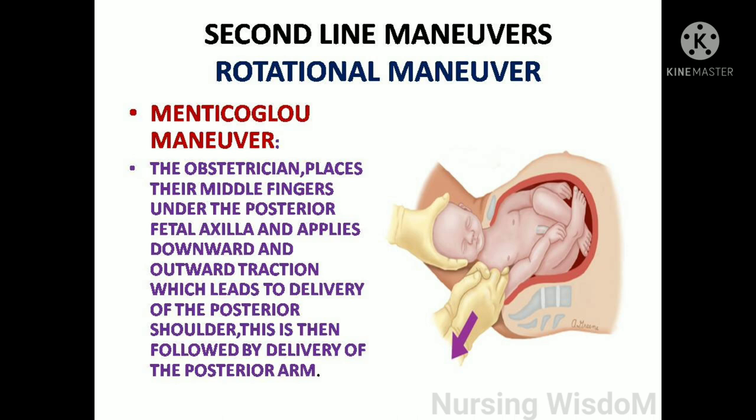The Menticoglou maneuver: the obstetrician places their middle fingers under the posterior fetal axilla and applies downward and outward traction, leading to delivery of the posterior shoulder. This is then followed by delivery of the posterior arm.